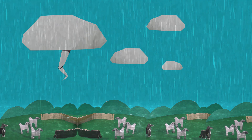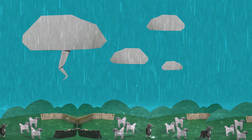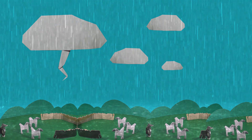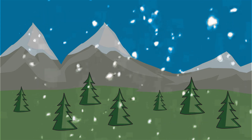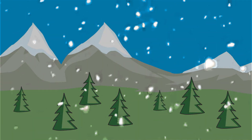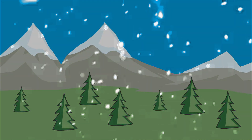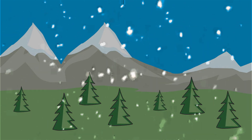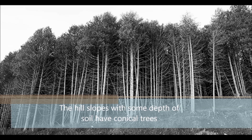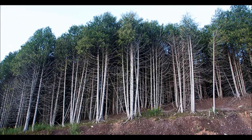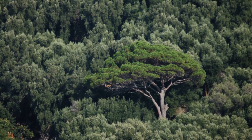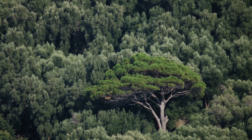In cold areas such as the slopes of the Himalayas and the upper regions of the hills of the Deccan peninsula, a fall in temperature affects the types of vegetation and its growth. So you would find trees such as fir and spruce, which have needle-like leaves that protect them from the cold rough weather around them.